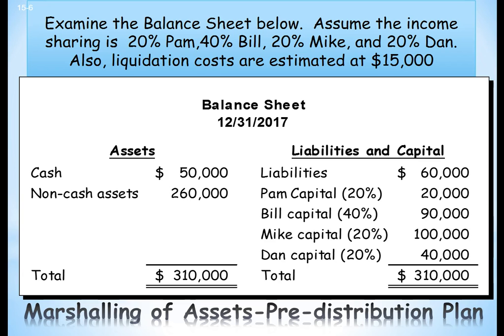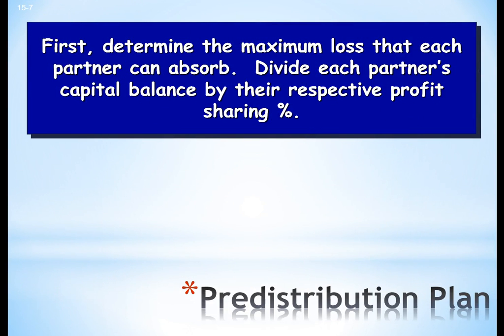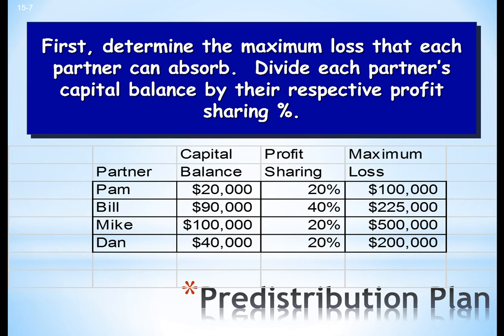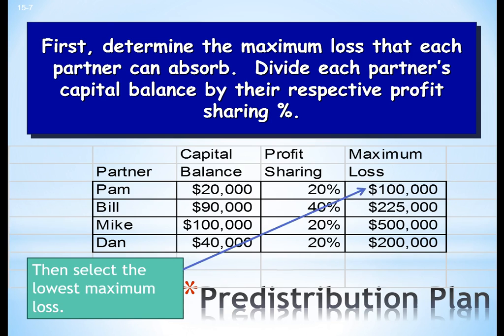This is a little different. We don't really pay attention to the cash, non-cash, or liabilities. What we're going to do is work through the maximum losses, and we keep doing it until we end up with one partner. First, determine the maximum loss that each partner can absorb. We divide each partner's capital balance by their respective profit sharing. Pam is divided by 20%, meaning she can't lose more than $100,000 or her balance will go negative. You do that for all the partners, and as we can see, the lowest is Pam, so that's the one we start with.